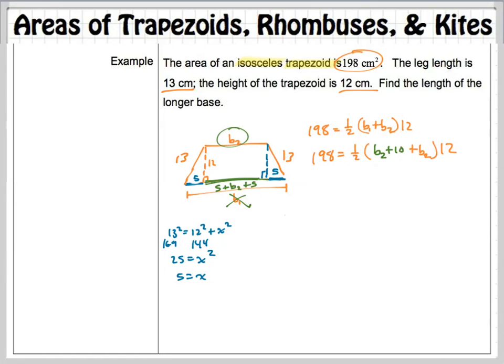So now I'm happier. Why am I happier? There's only one variable in here. We just have to simplify and combine like terms right here. So how many B sub 2s do I have right here? There's two B sub 2s. So let's simplify the right side. Let's go ahead and get rid of this 1 half and the 12. What's 1 half times 12? 6. And then we have two B sub 2s plus the 10 right here.